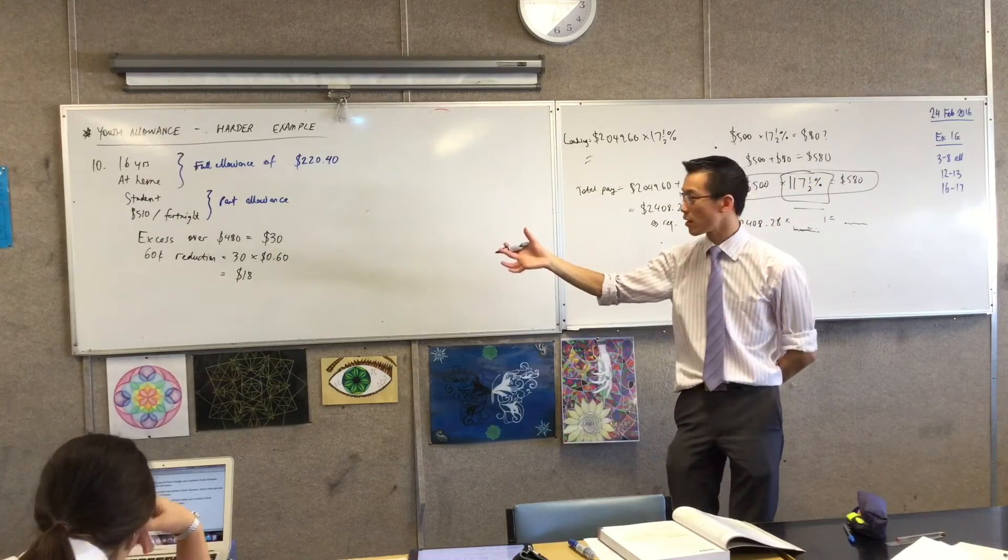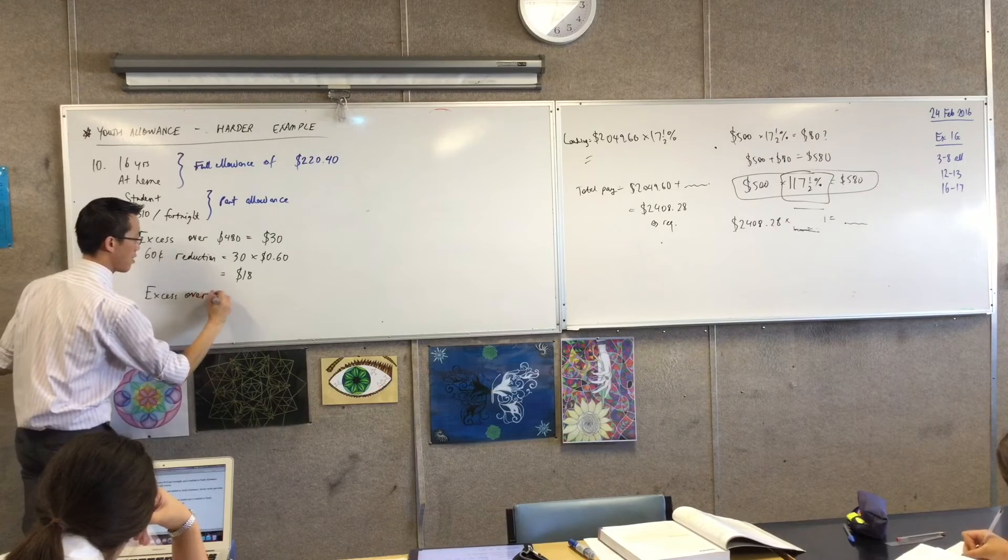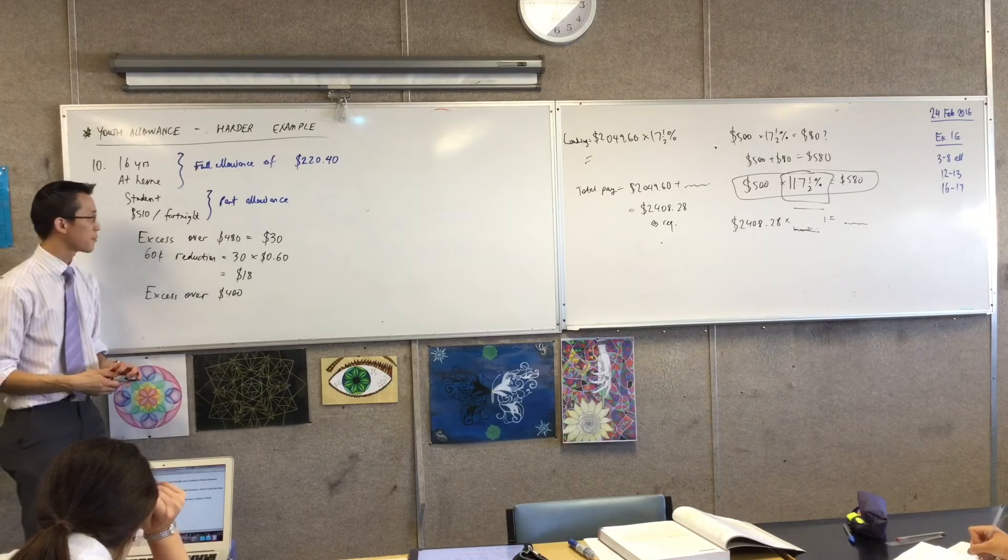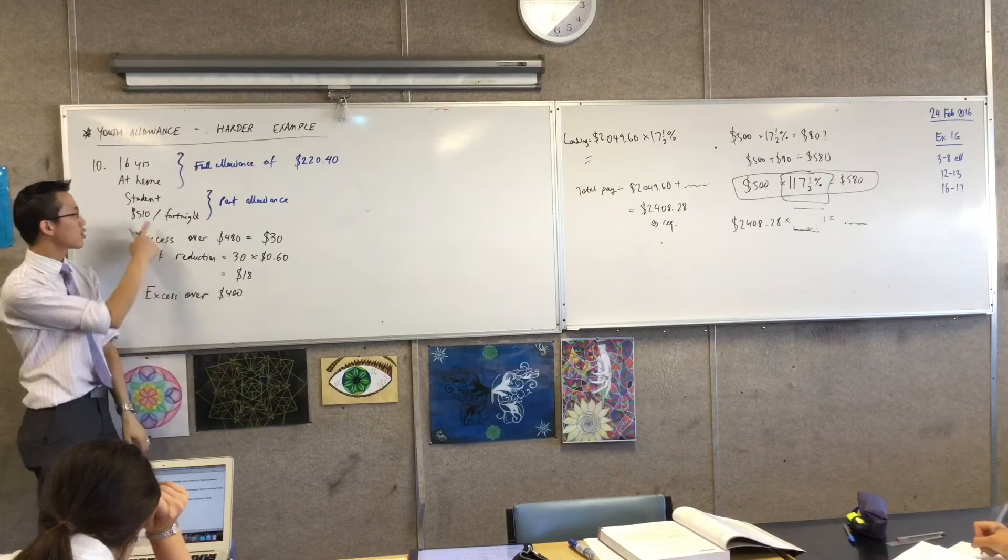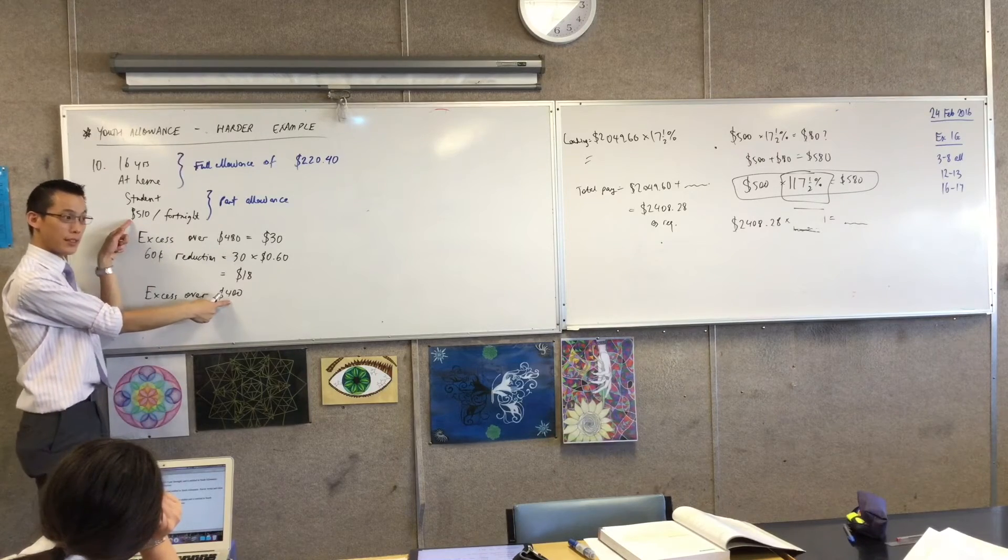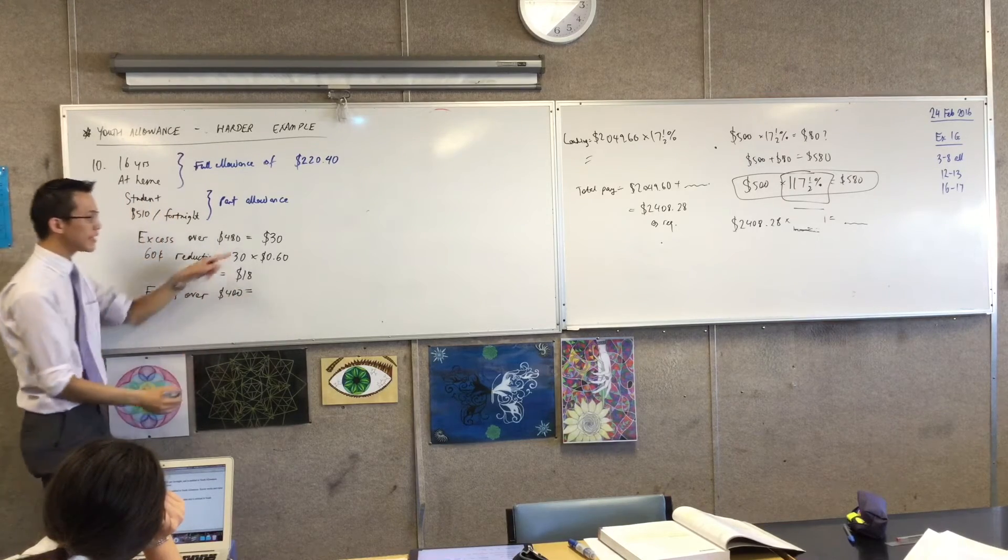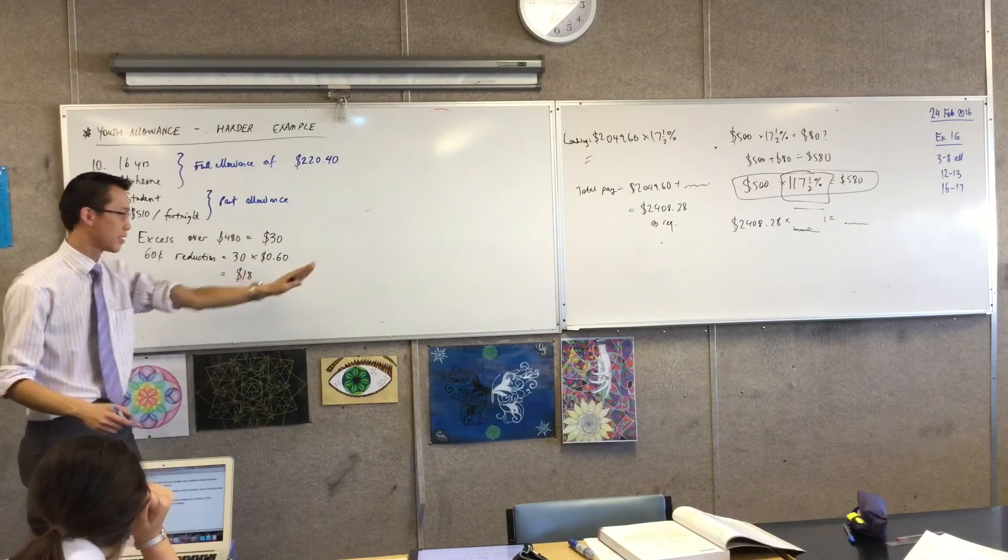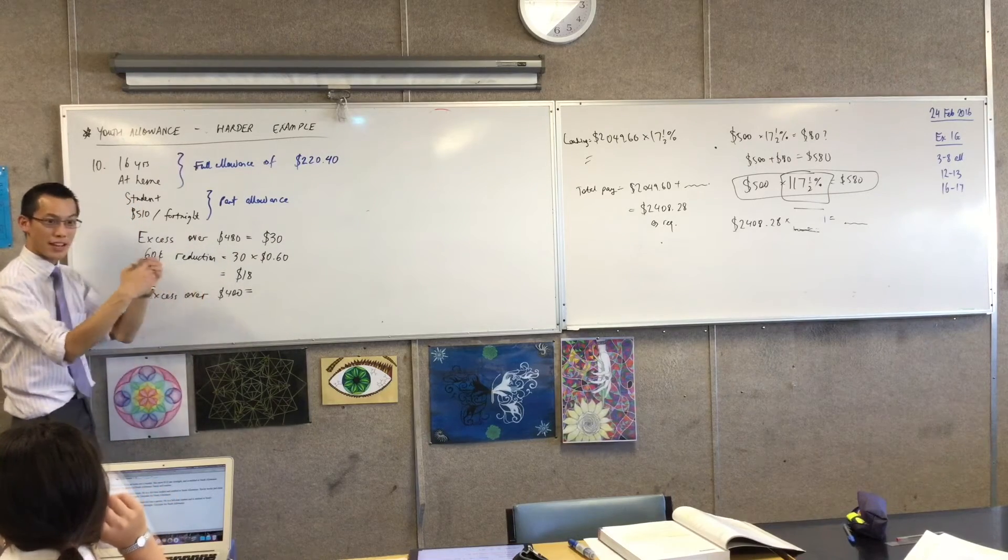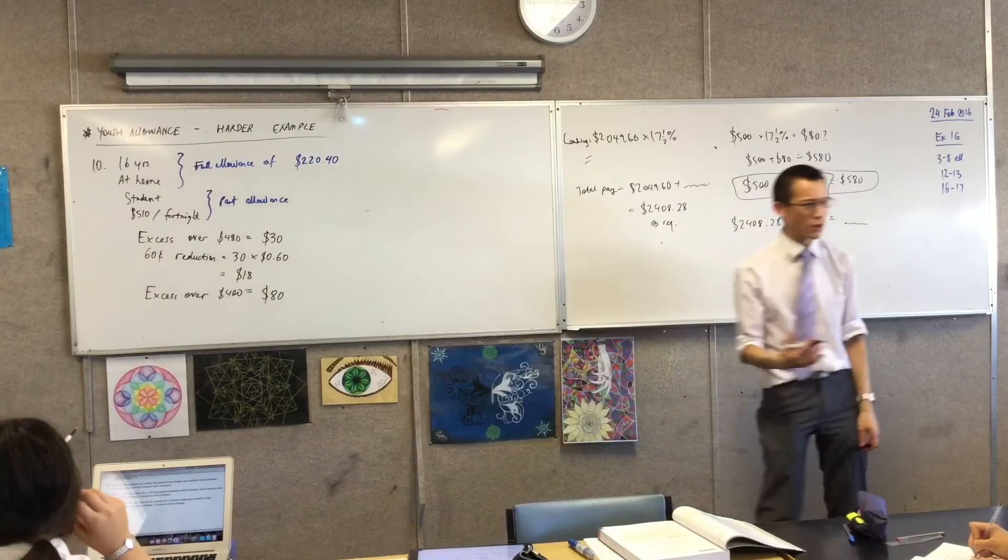So there's a 60 cent reduction. That's the first one. But there's a second one isn't there. So I'm going to say there's also an excess over $400. Now this is a bit sneaky. Please watch this really carefully. An easy mistake to make would be to say, look, she earns $510. So how much is that over $400? And the answer is there's a $110 difference here. So it would be a common sense thing to say $110. But in fact, it's not. We've already dealt with 30 of those $110. Do you notice that? We've dealt with that excess.